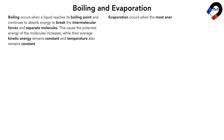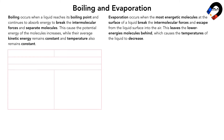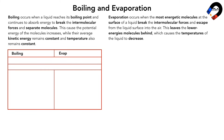Evaporation occurs when the most energetic molecules at the surface of a liquid break the intermolecular forces and escape from the liquid surface into the air. This leaves the low energy molecules behind, which causes the temperature of the liquid to decrease. The similarity between boiling and evaporation is that both processes change state from liquid into gas.